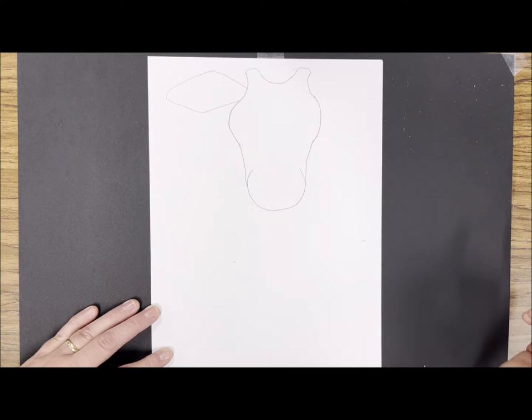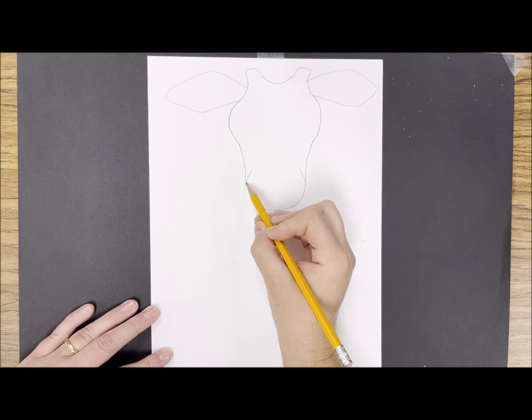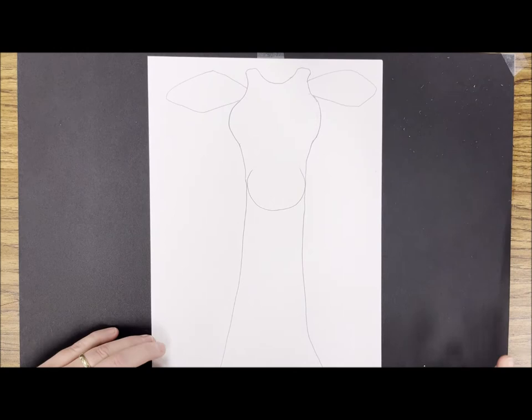For the ears I'll do sort of a stretched out diamond shape on both sides. And then for the neck I'm gonna start at the bottom of the snout and bring it all the way down to the edge of the paper, spreading those lines apart just a little bit towards the bottom.